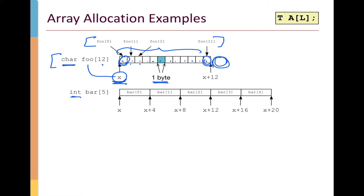Similarly, for an array of integers, we have an array called bar with 5 integers, indexed bar[0] through bar[4]. Because integers on a 64-bit machine are 32 bits wide, the array starts at address x — the location of the very first byte. Those 4 bytes store the first integer. The second integer, at bar plus 1, starts at x plus 4; the next at x plus 8; the next at x plus 12, and so forth to the end of the array.